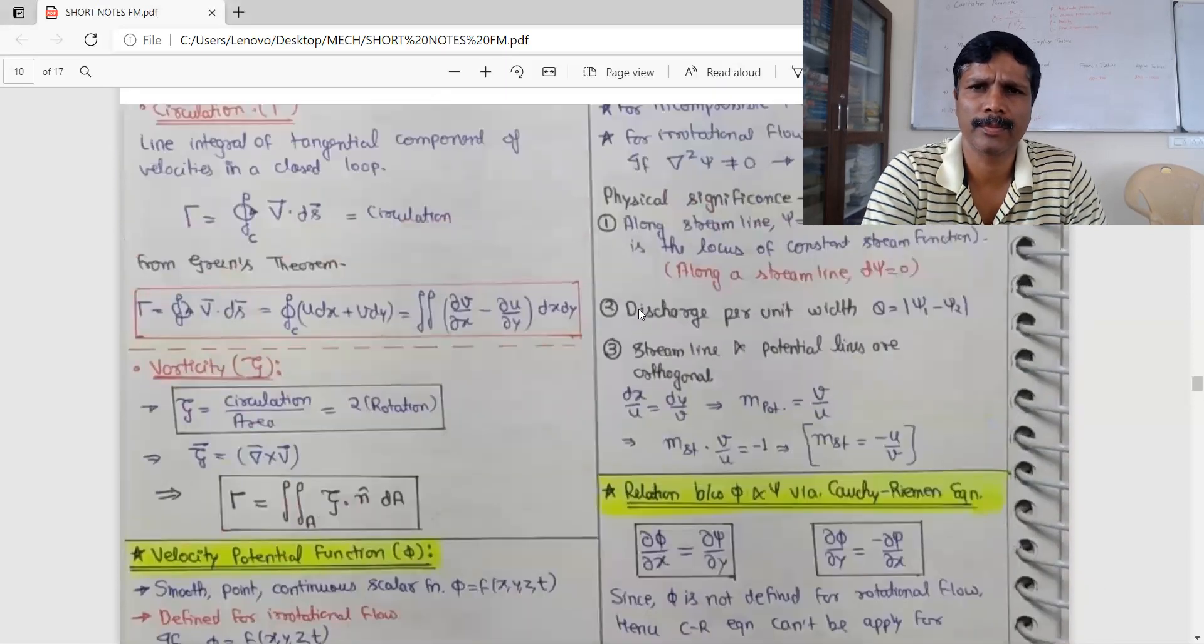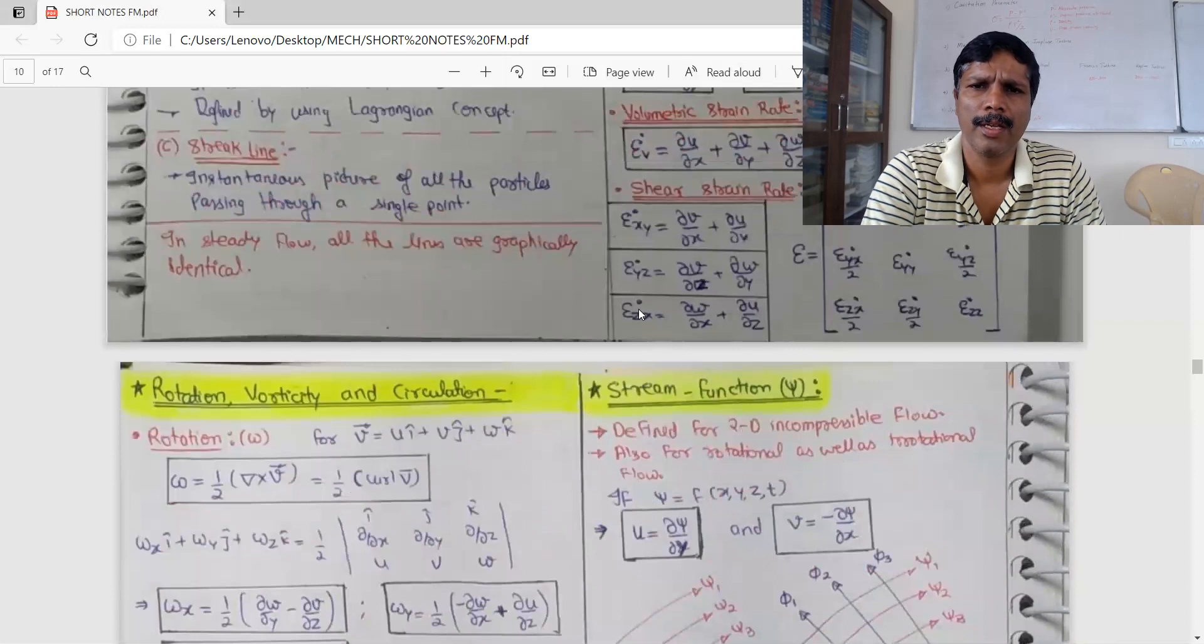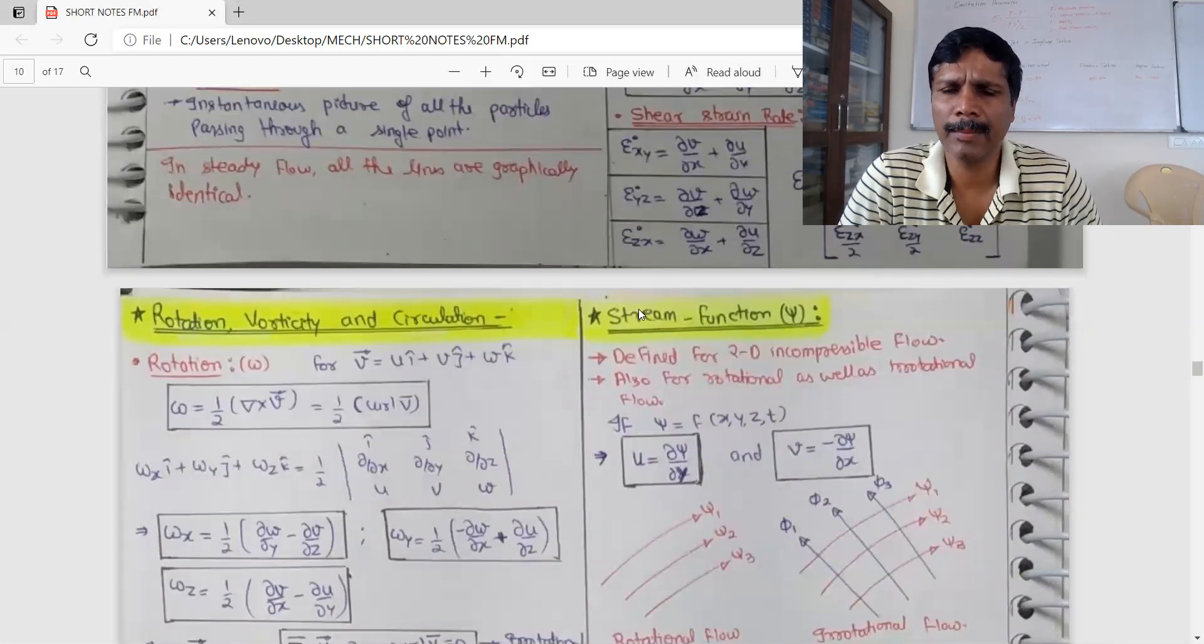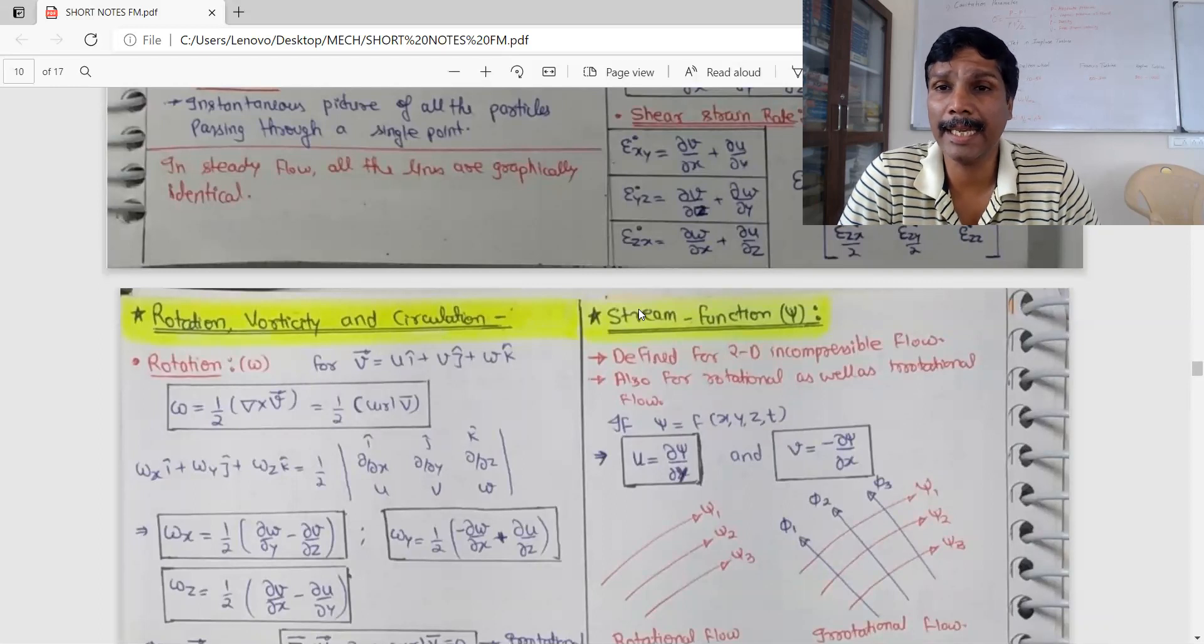Let's look at what? Stream function is called psi.